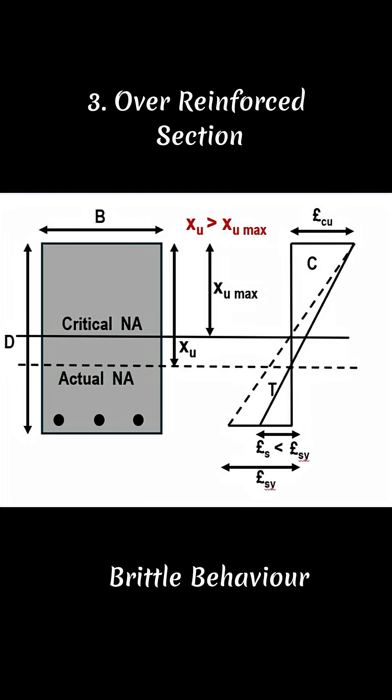In an over-reinforced section, xu is greater than xu max. In this section, concrete crushes before steel yields. It's a sudden failure.